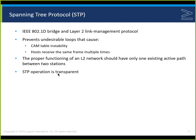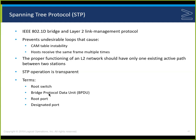The operation is transparent. It's enabled by default — you can turn it off, as we saw, but it's probably not a good idea. Some terms: we have the root switch, a BPDU (bridge protocol data unit), a root port, and a designated port. BPDUs are how bridges share information to negotiate and elect the required roles. We assume one instance per network for 802.1D, and there are root ports and designated ports for these things.